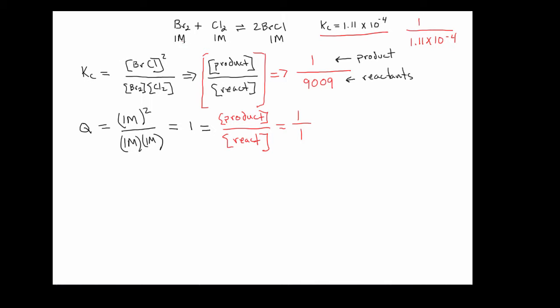Where the problem stands at the moment, where we have, in this reaction vessel, we've combined 1 molar Br2, 1 molar Cl2, and 1 molar BrCl. We have a ratio right now in that reaction vessel of literally one product to every reactant. And what needs to happen is we need this ratio here to shift back to this one here.